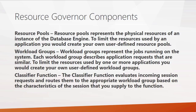Next, you create a workload group. A workload group basically represents similar jobs running on the system. When you go to limit the resources used by one or more applications, you create a user-defined workload group and connect it to the resource pool you created. Finally, you create a classifier function. The classifier function looks at incoming requests and routes them to the appropriate workload group — either the custom workload group if the criteria matches, or the default workload group if it doesn't.